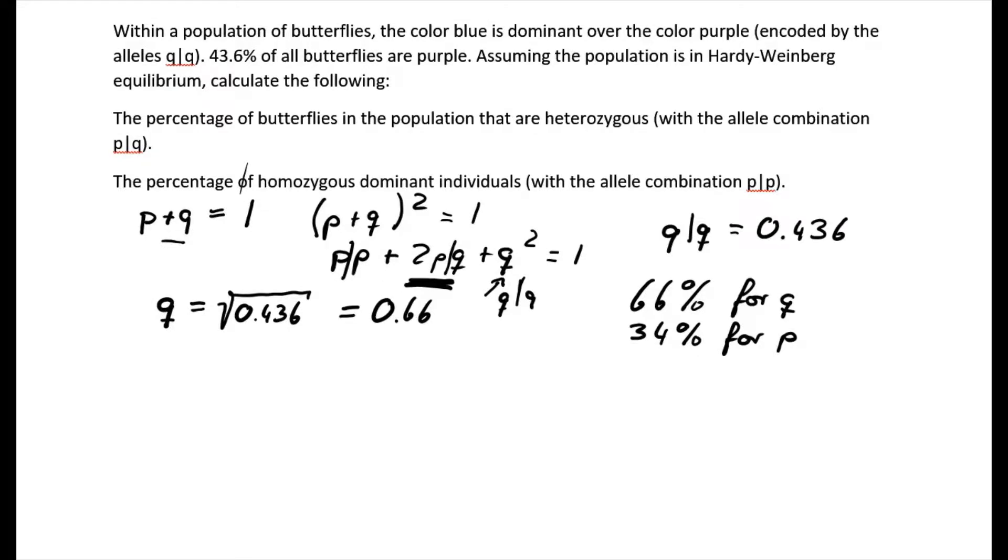We can now use these numbers that we calculated and go for the heterozygotes. So we know for the heterozygotes, we have this 2PQ. Let's put in the numbers. We've got 2 times, for P, we got 0.34 times 0.66 for Q. If we put that into a calculator, we get roughly 0.4488, which would give us 0.449 rounded. So 44.9% are PQ, the heterozygotes.